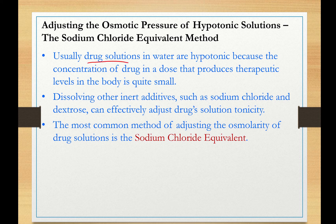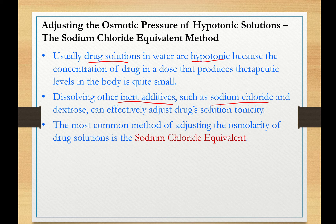Drug solutions are always hypotonic because the concentration of drug in a dose that produces or achieves therapeutic levels in the body is quite small. The only way to increase the tonicity of a drug solution is to add more solutes. We add inert additives or excipients such as sodium chloride and dextrose to increase the tonicity of a hypotonic drug solution to physiological values.